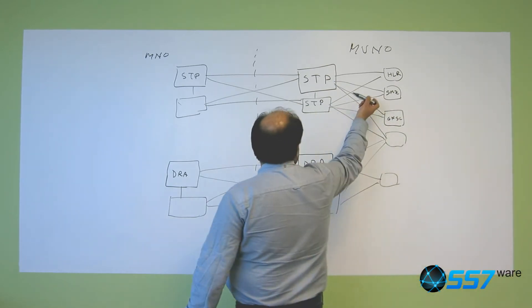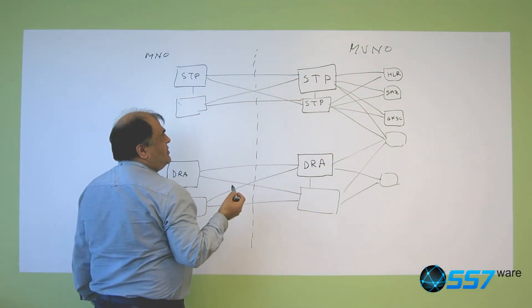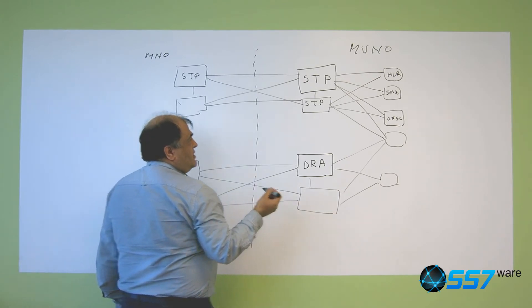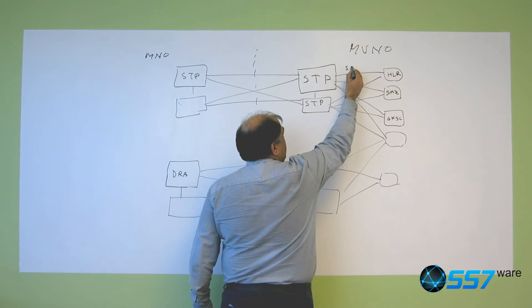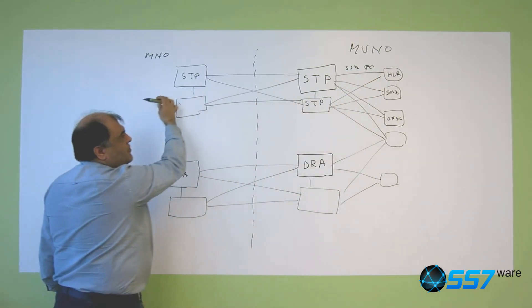Because when the message passes through those signaling transfer points it gives up some of the information. For example for SS7 the point code is not preserved typically between the operators.